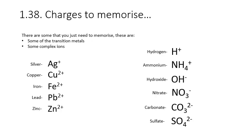In addition to using the periodic table, there are also a few ions whose charges we just need to memorise — there's no way around it. For transition metals: silver is 1+, and copper, iron, lead, and zinc are all 2+. You also need to know the hydrogen ion (1+), ammonium (NH₄⁺, 1+), hydroxide (OH⁻, 1−), nitrate (NO₃⁻, 1−), carbonate (CO₃²⁻, 2−), and sulfate (SO₄²⁻, 2−). Don't be confused: the subscript numbers like 3 and 4 refer to the number of atoms in the ion, not the charge. Nitrate is NO₃, 1−; carbonate is CO₃, 2−; and sulfate is SO₄, 2−.